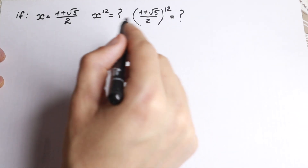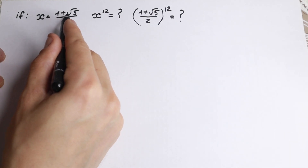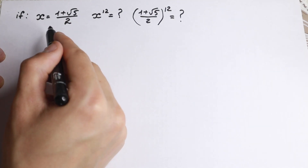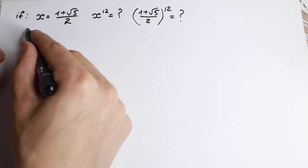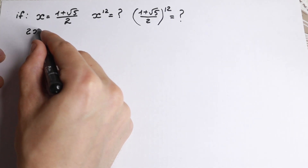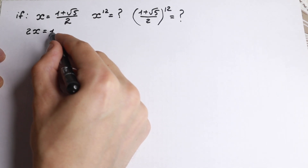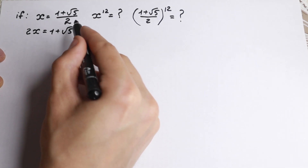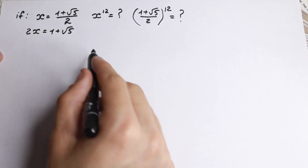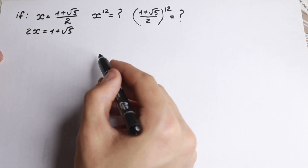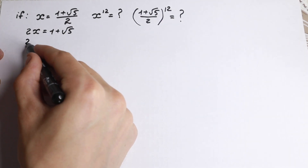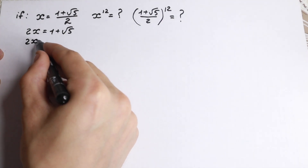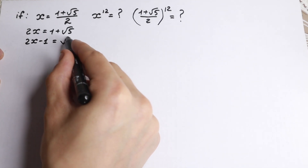Let's say x equals 1 plus square root of 5 over 2, and let's step by step find x from here. Using cross multiplying, we get 2x equal to 1 plus square root of 5. Let's bring this one to the left hand side, so we will have 2x minus 1 equal to square root of 5.